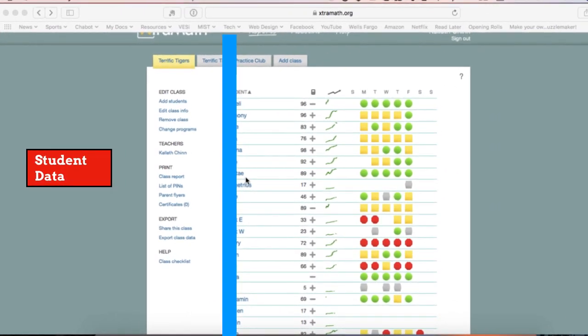So let's take a look at the teacher interface. This is where you'll see all the student data. I blocked out my students' names with that blue bar, but you can see how it looks.